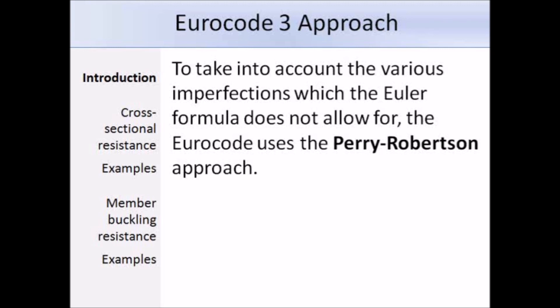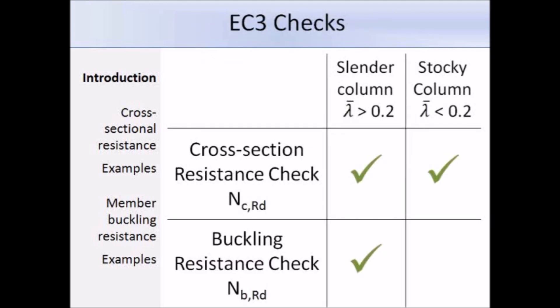Robertson determined values for initial imperfections for a range of structural cross-sections, and five different imperfection amplitudes are included through the imperfection factor alpha, giving five buckling curves. Now that we have covered the theory, here is a summary of the design checks required when designing a compression member to Eurocode 3. For a slender column where lambda-bar is greater than 0.2, we need to check both cross-section resistance and buckling resistance. Eurocode 3 part 1-1 states that buckling effects may be ignored for stocky columns, so only a cross-section resistance check is required.